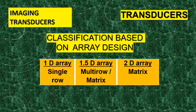We have three categories of transducer design: 1D array transducers, 1.5D array transducers, and 2D array transducers. In this lecture, we'll talk about the design of the active elements — how they are designed inside the transducer, whether in one row, two rows, three rows, or multiple rows.